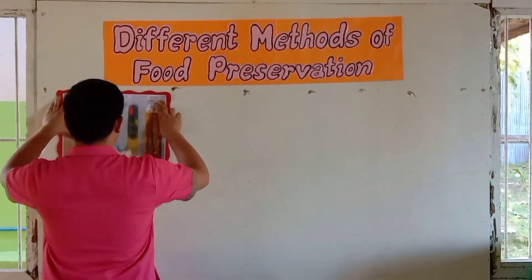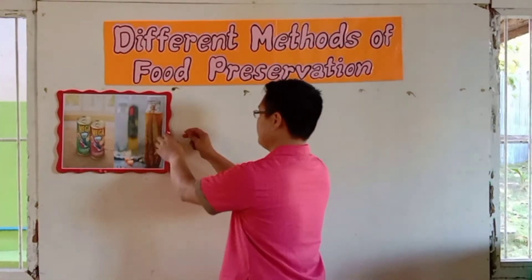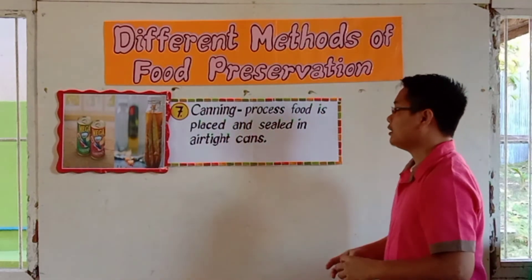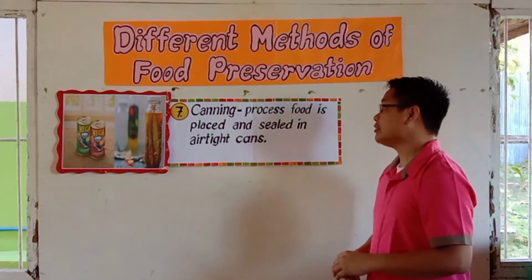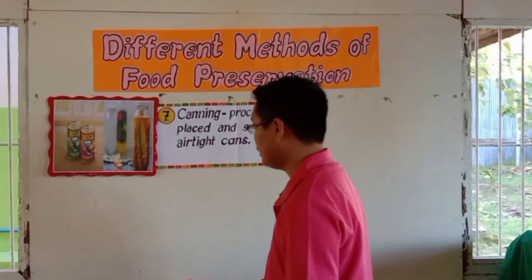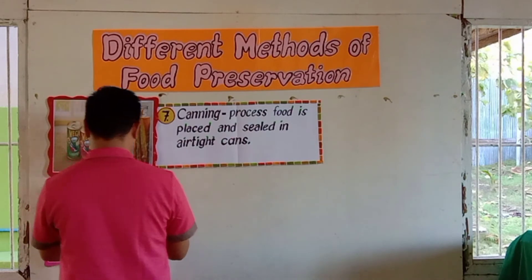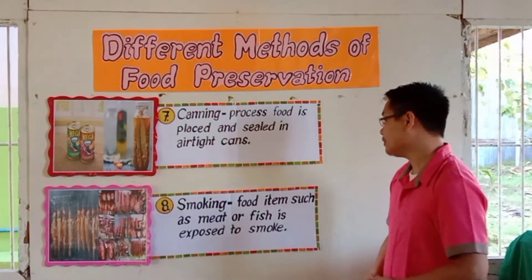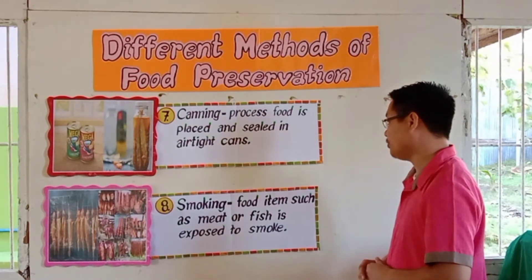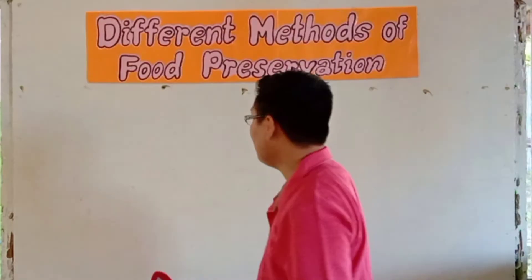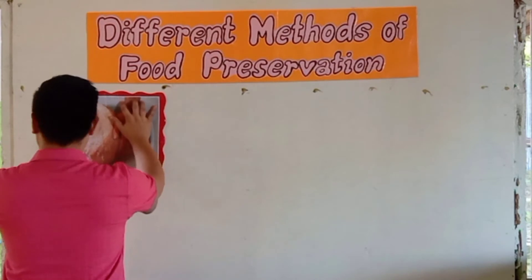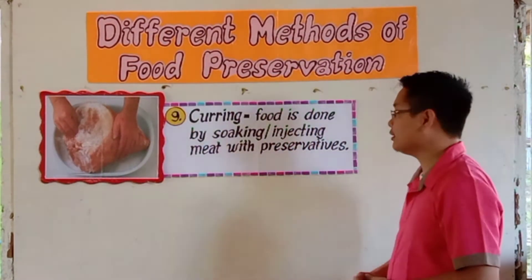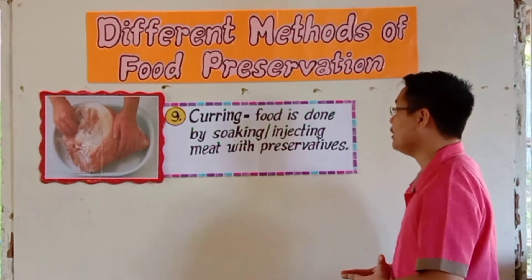This next method involves honey. Canning is a process where food is placed and sealed in an airtight can. Smoking is when food items such as meat or fish are exposed to smoke. The last method of food preservation is curing, where food is done by soaking or injecting meat with preservatives.